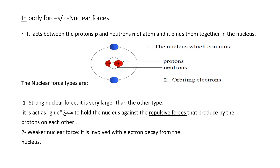There are nuclear force types. Strong nuclear force is very much longer than the other type and it acts like glue — like a band — to hold each other against the repulsive force. It acts like a band to hold the nucleus against the repulsive forces produced by the protons on each other. Like in electricity or magnetism, like charges repel each other — that is fact.